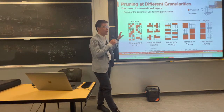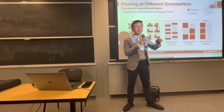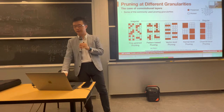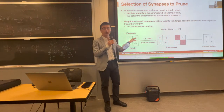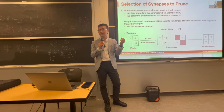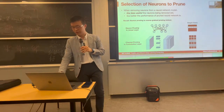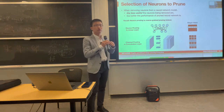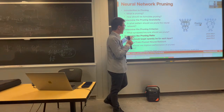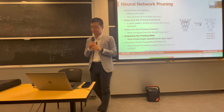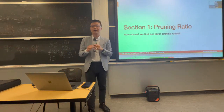We discussed the different granularities of pruning, from fine-grained to coarse-grained — where we can prune the most and where it's easiest to accelerate, versus where we require specialized accelerators. For selecting which synapses or neurons to prune, magnitude-based pruning is the most popular approach today. Now let's move to a new chapter: determining the pruning ratio — specifically what sparsity to assign to each layer.